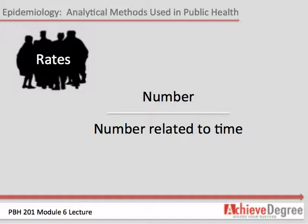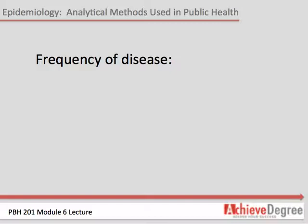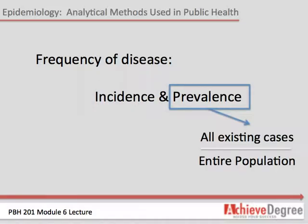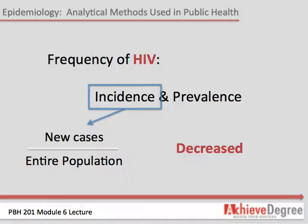Two basic concepts are used to describe the frequency of disease in a population: incidence and prevalence. Incidence is the frequency of new cases of the disease divided by the entire population under study, while prevalence is the frequency of all existing disease divided by the entire population under study. The distinction between the two concepts is very important. For example, the incidence — or number of new cases — of HIV in the United States has greatly decreased since the 1980s and 90s. This is because public health has identified the ways the virus spreads, has educated the population on how to avoid contracting the virus, and has developed numerous prevention programs.